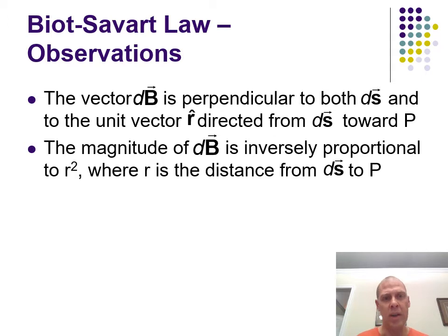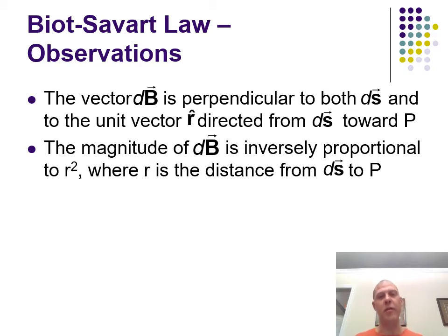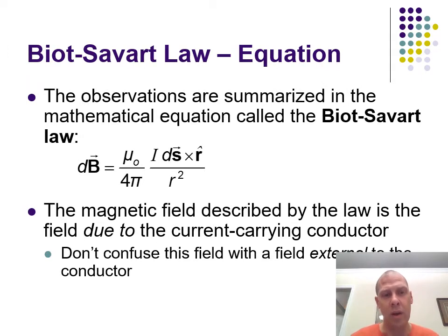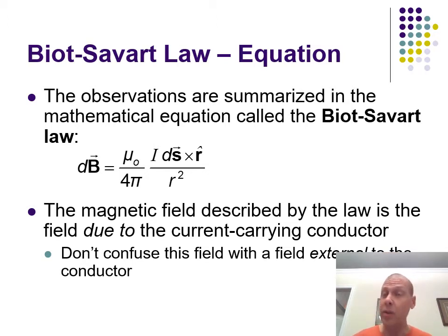Each piece of magnetic field adds up at one point because superposition applies. The magnetic field is going to be the sum of all the different pieces from all the charges moving along a segment of wire. Biot-Savart is very good for two specific situations: a wire of a specific finite length and a wire that is in an arc, and that allows us to handle this cross product, making everything at 90 degrees.